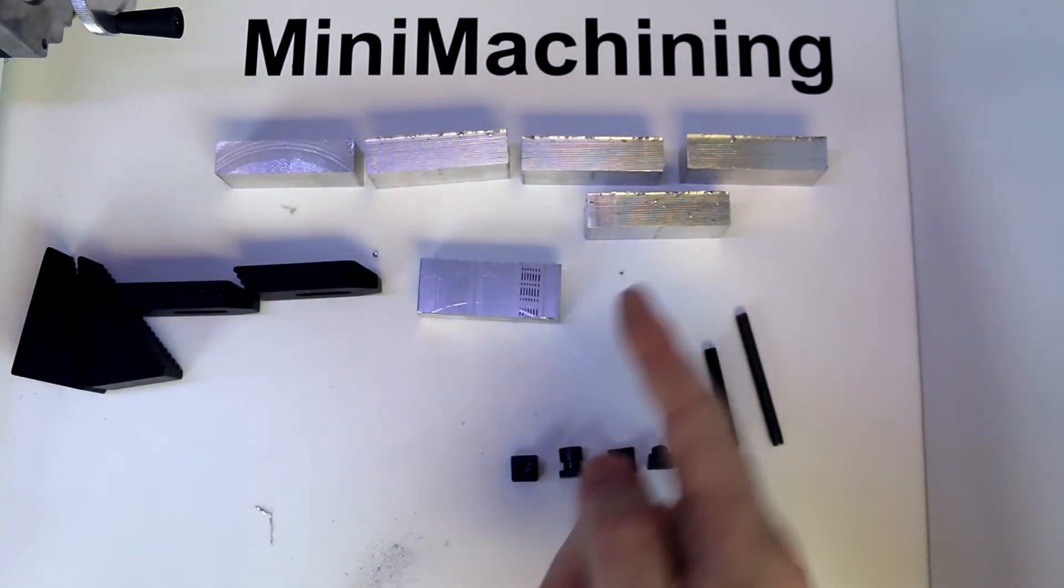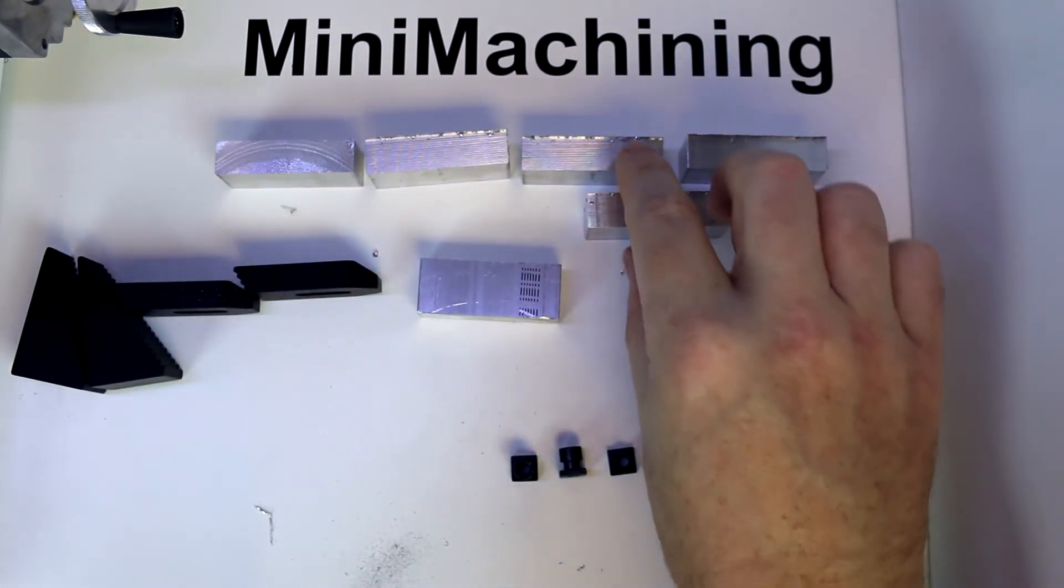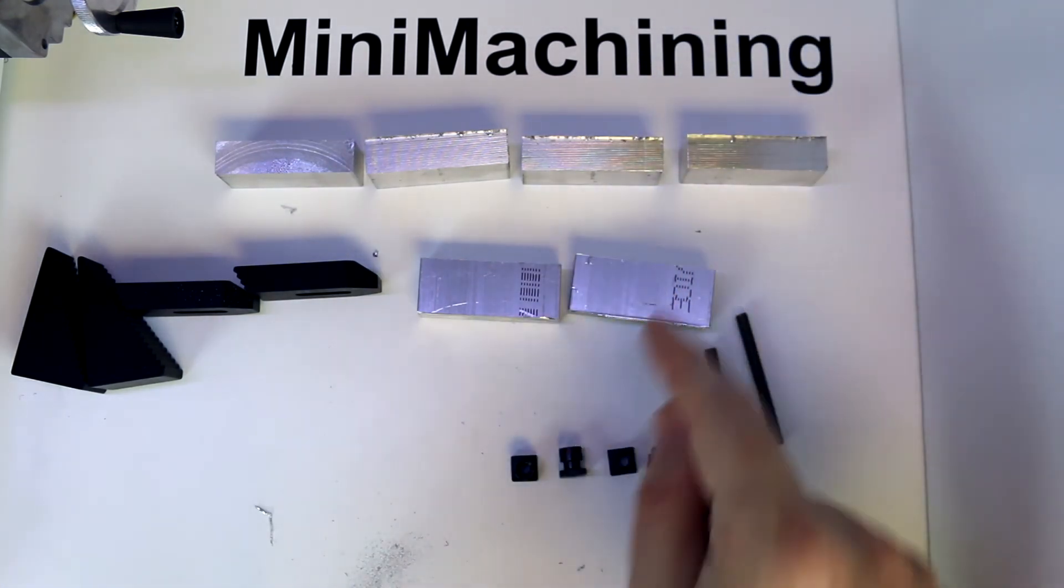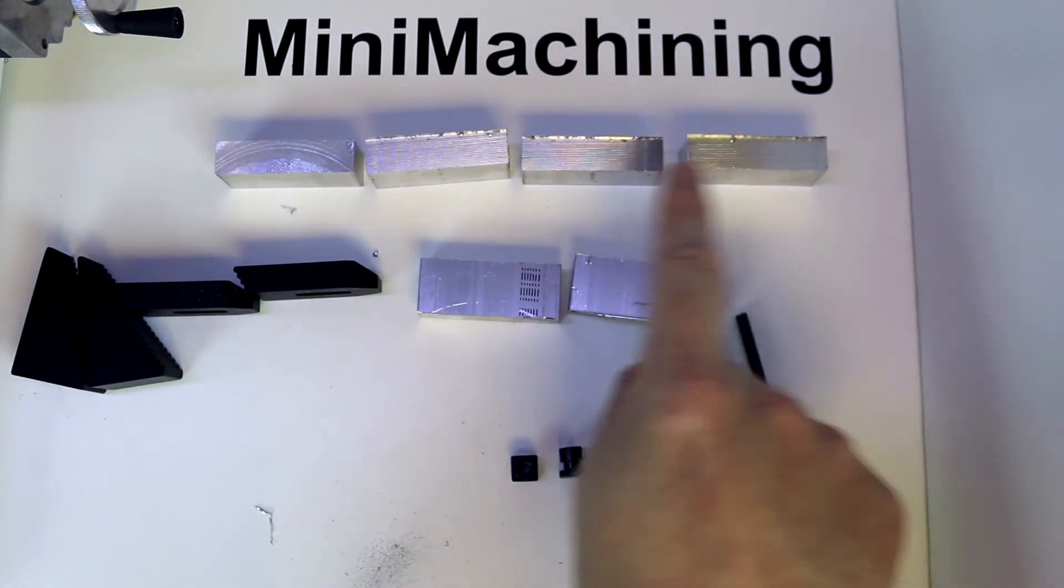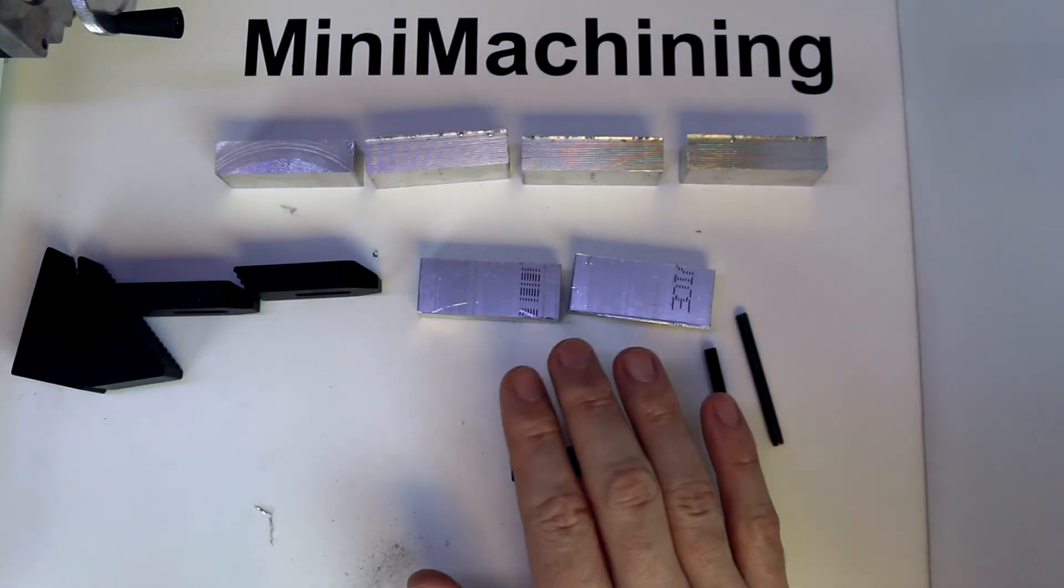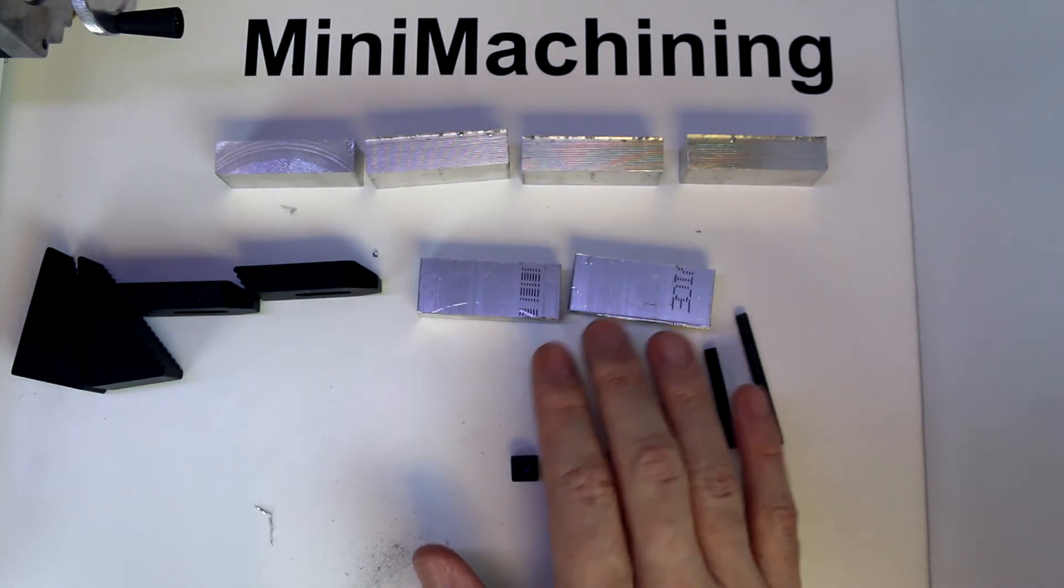And then slicing these off in this type of direction rather than, as I've done, along this long axis. This is just the size of stock I happen to have on hand, so this is what I've chosen to use. It's going to take a few more milling operations and a little bit more work doing it this way.